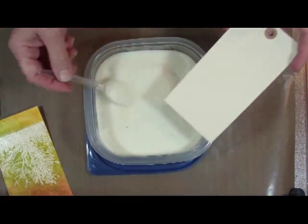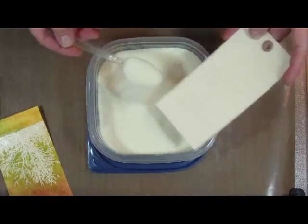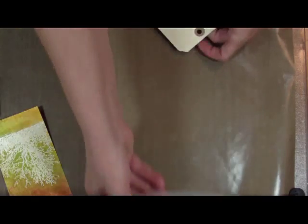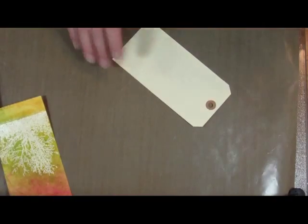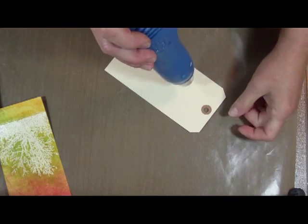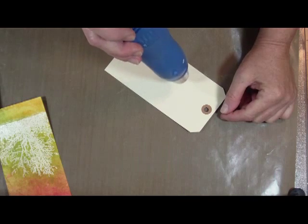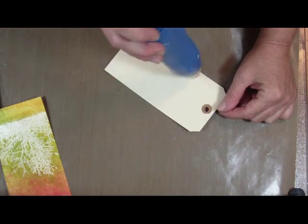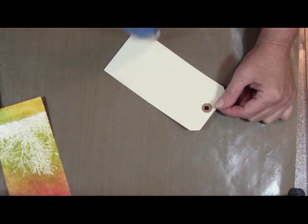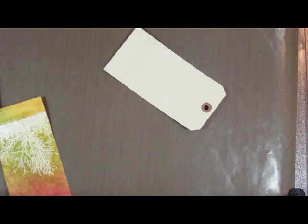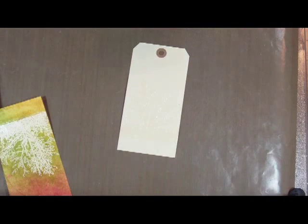I'll then sprinkle on my UD, and from here we're going to emboss this. Make sure that all of the UTEE is melted. And just to show you what I've done, this is quickly, but I already have one that is embossed.